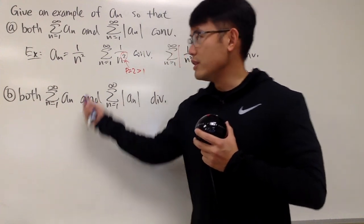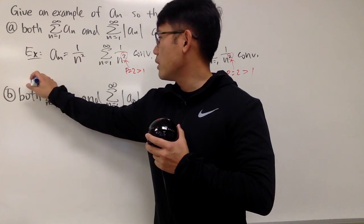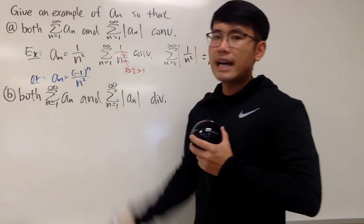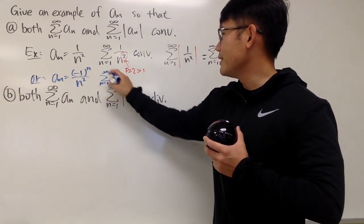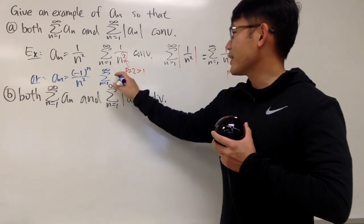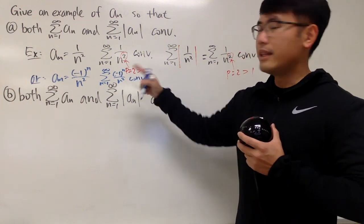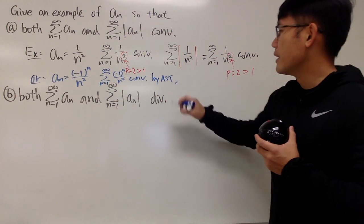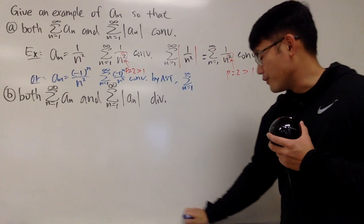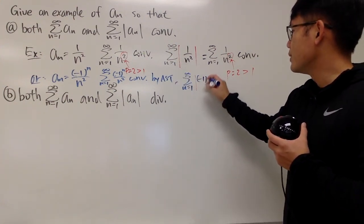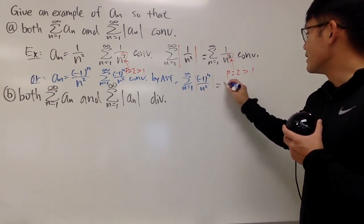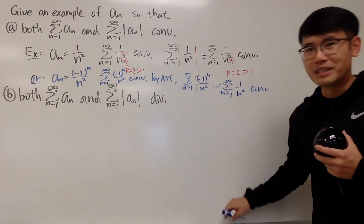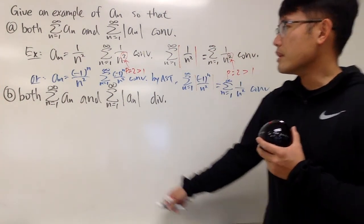If you want to be fancier, you can make this the alternating version as well. You can say a_n = (-1)^n / n² (or (-1)^(n-1) / n², doesn't matter). The series as n goes from 1 to infinity of (-1)^n / n² converges by the Alternating Series Test (AST). And the absolute value version, the series as n goes from 1 to infinity of |(-1)^n / n²|, equals the series of 1/n², which also converges — so either example works.